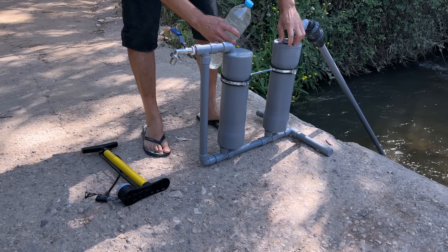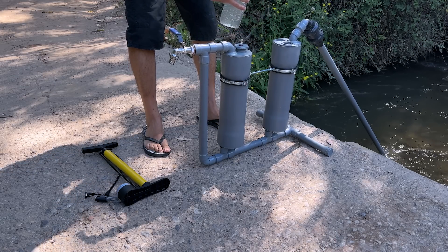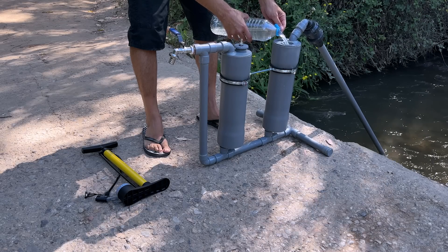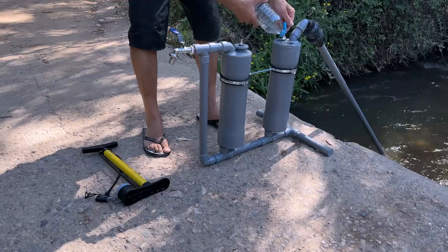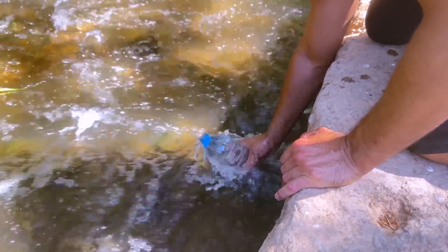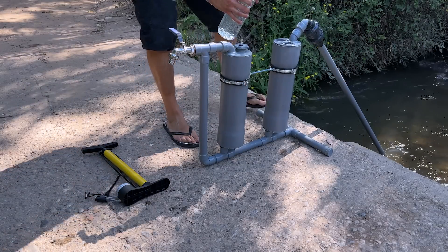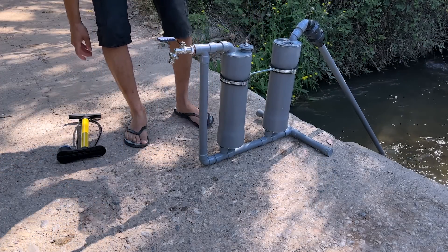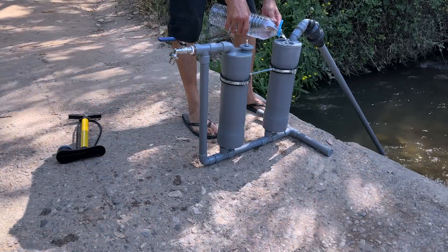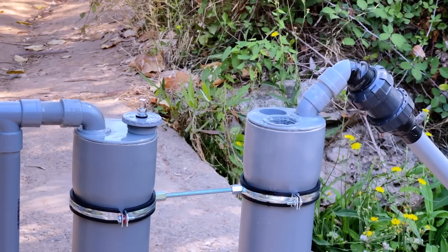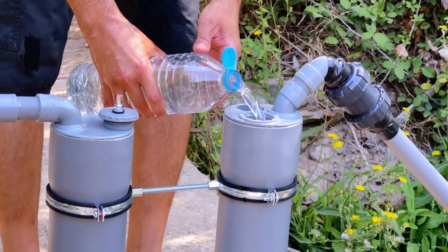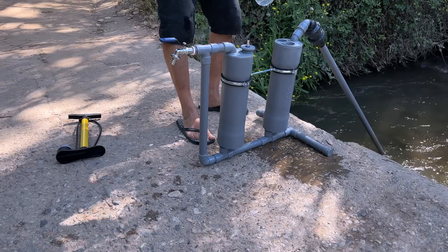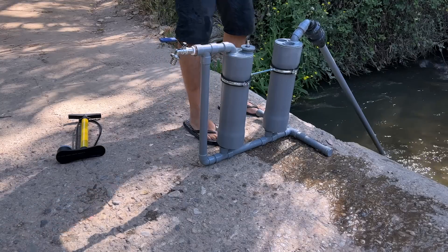The cycle begins with a simple process. The closed circuit is filled with water. Unlike traditional systems, there are no electric motors or mechanical pumps here. Only controlled hydropneumatic pressure. We open the tap to remove any air from the lower tubes. We close the tap.